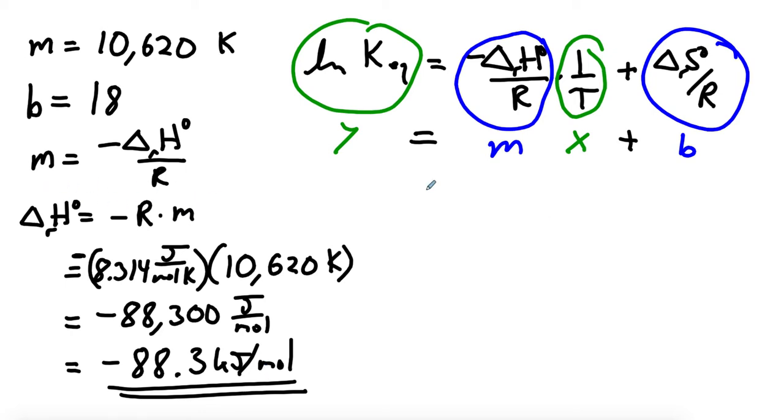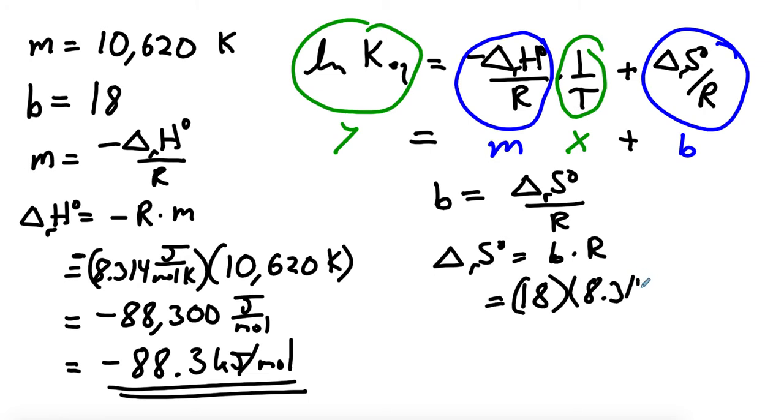Now let's do the Y-intercept and the delta S. The Y-intercept B is equal to delta S over R, so delta S standard is just equal to the Y-intercept times the slope. The Y-intercept was 18, unitless, and R is 8.314 joules per mole per Kelvin. That comes out to 150 joules per mole per Kelvin, which are also appropriate units for entropy. That's how we can extract these constants as long as we have the data showing us how the equilibrium constant varies with temperature.